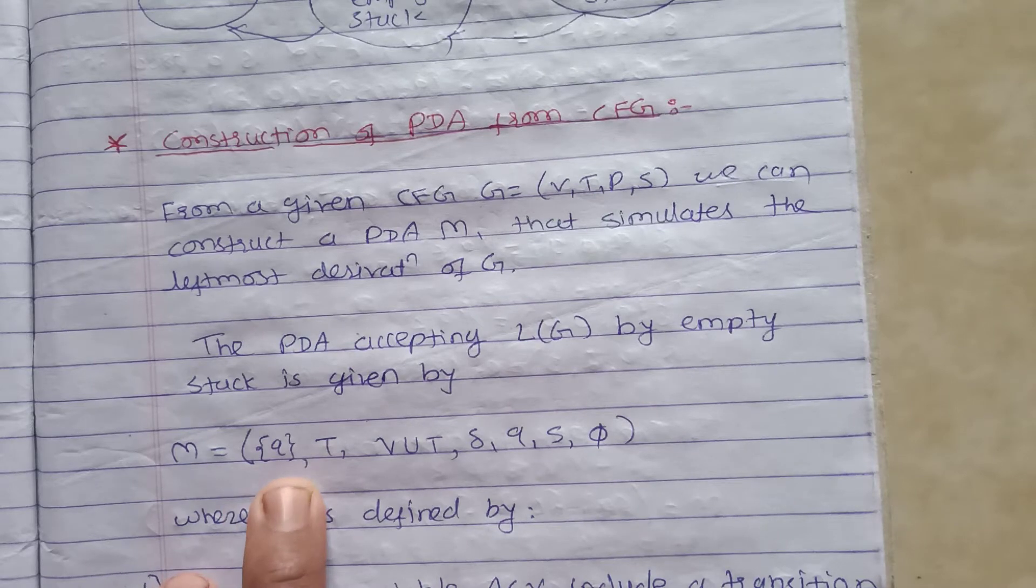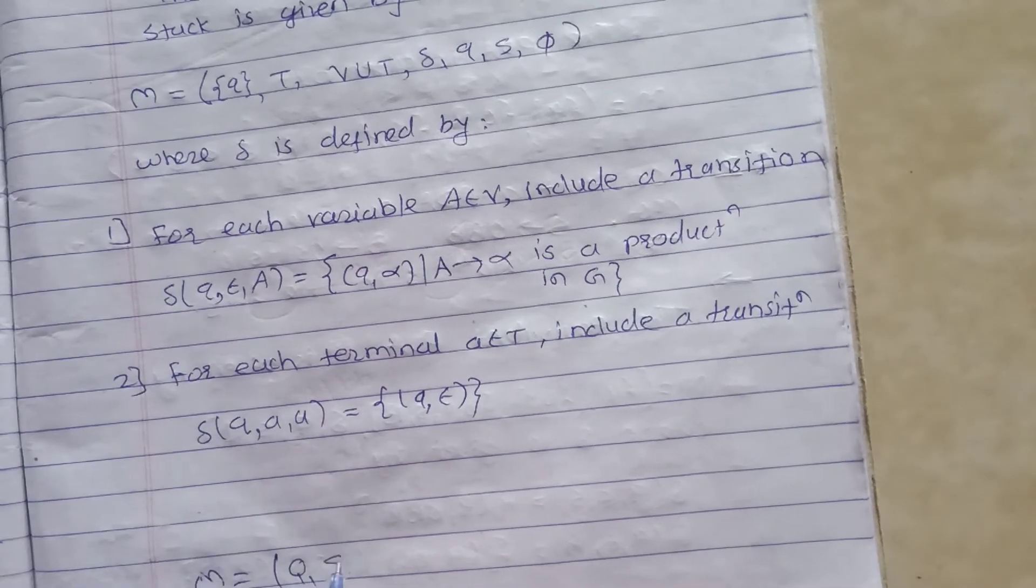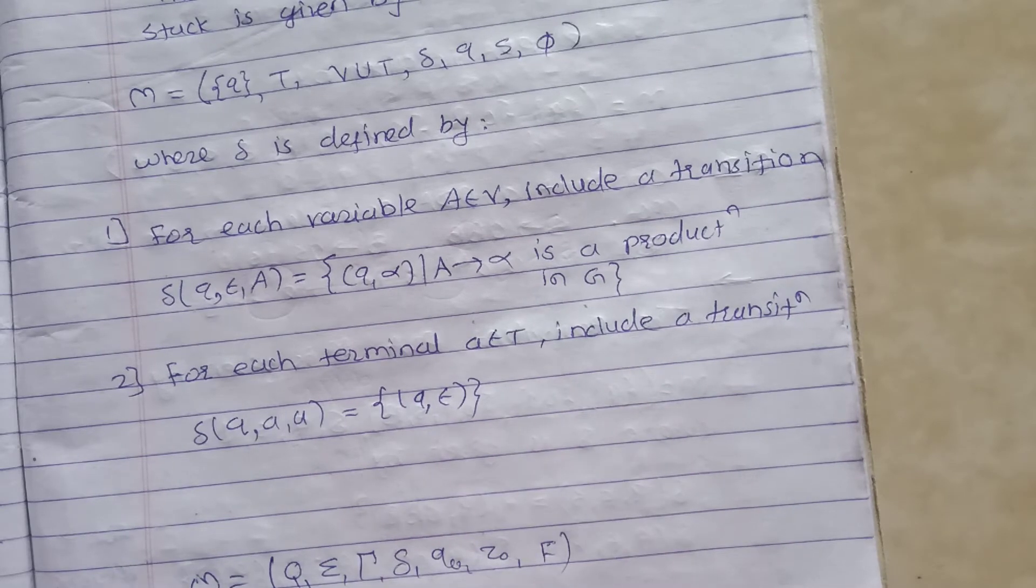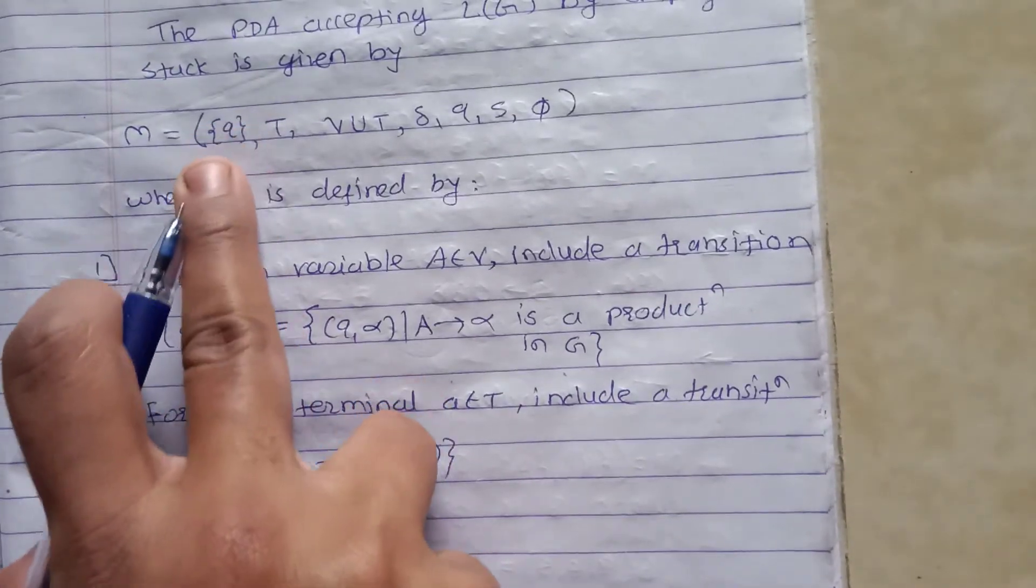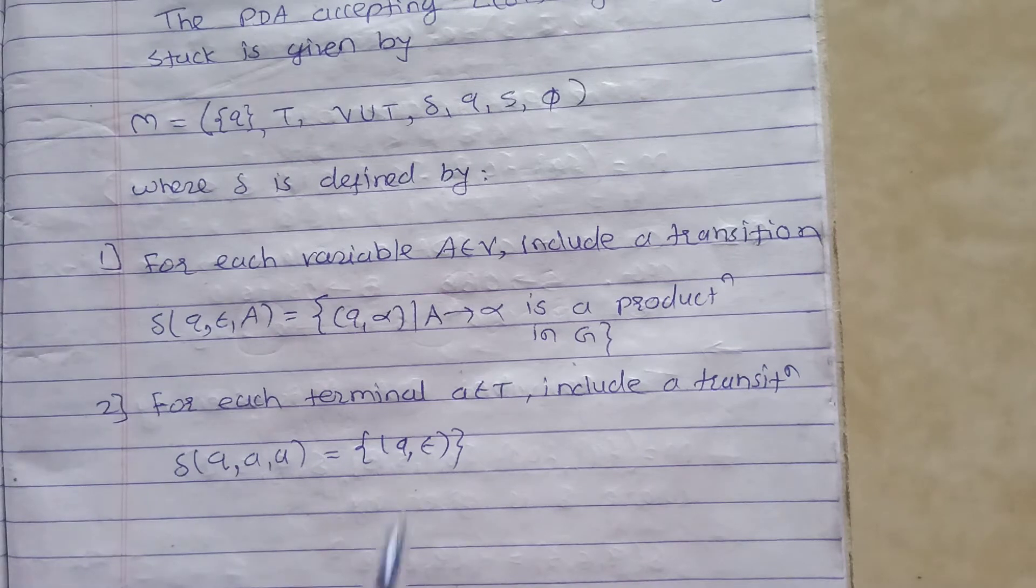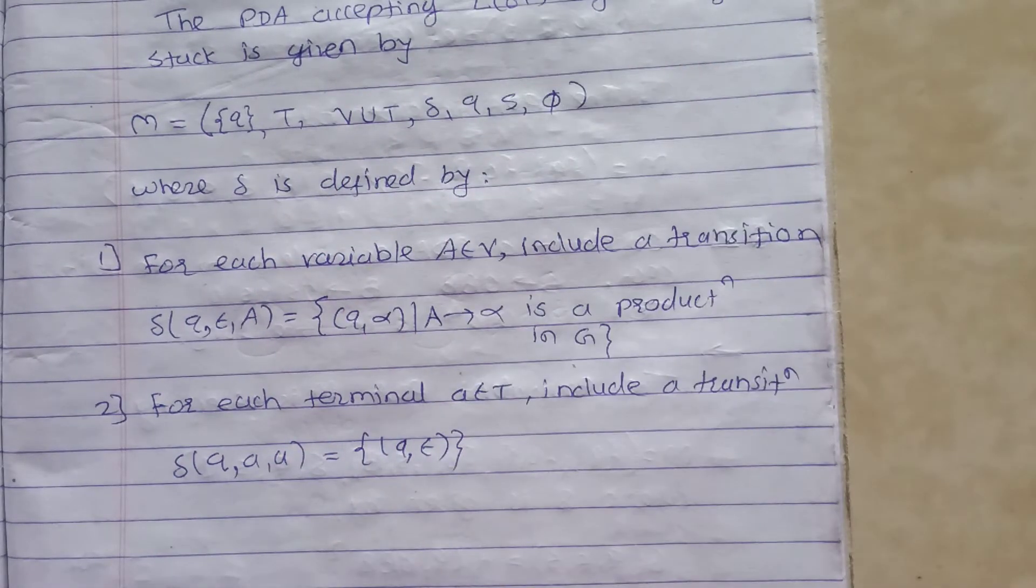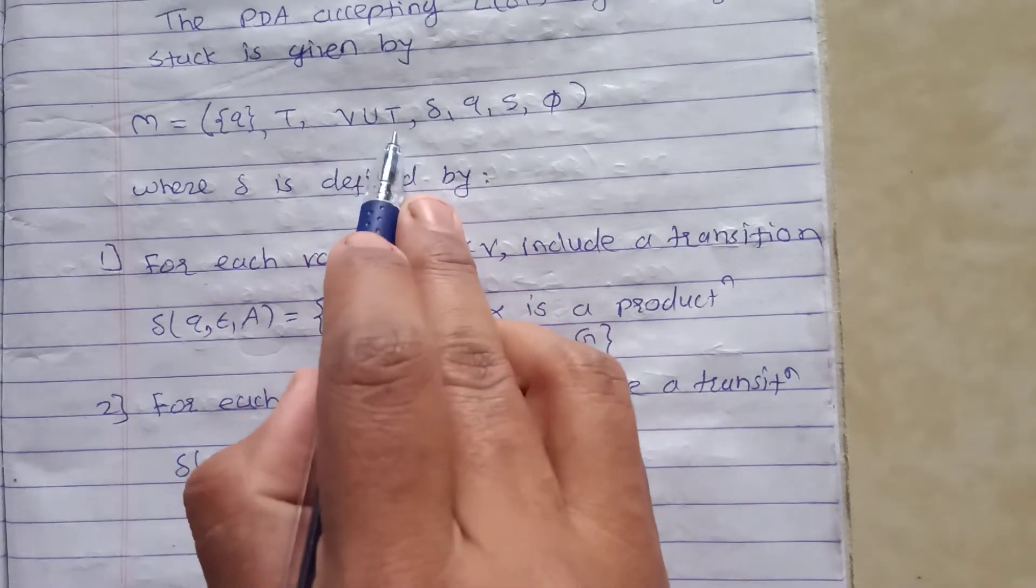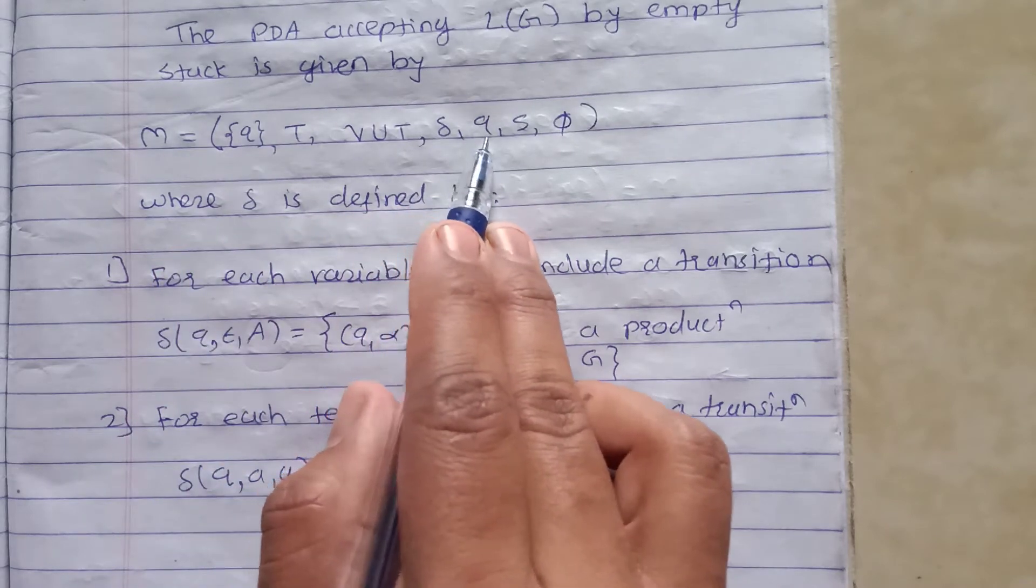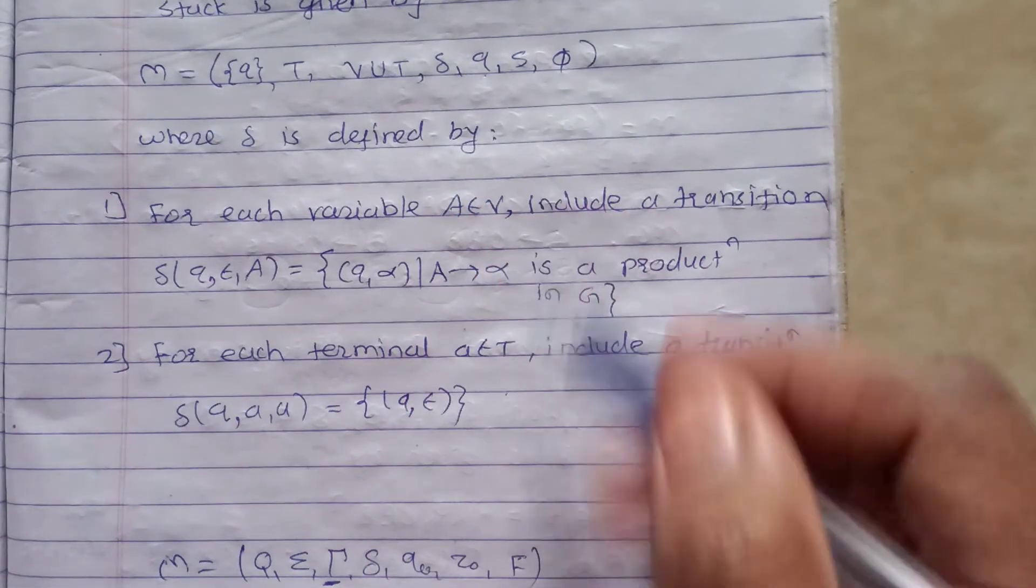The PDA accepting L(G) by empty stack is given by M equals (Q, Σ, Γ, δ, q0, Z0, F). These are the seven tuples. Q, only one Q will be sufficient to process here. The input is nothing but the terminal set, and Γ is nothing but variable union terminal. Delta function, q0 is nothing but Q only - one state. Z0 is a stack symbol, but we will consider the start state, and the final state is not left here, that is why phi.